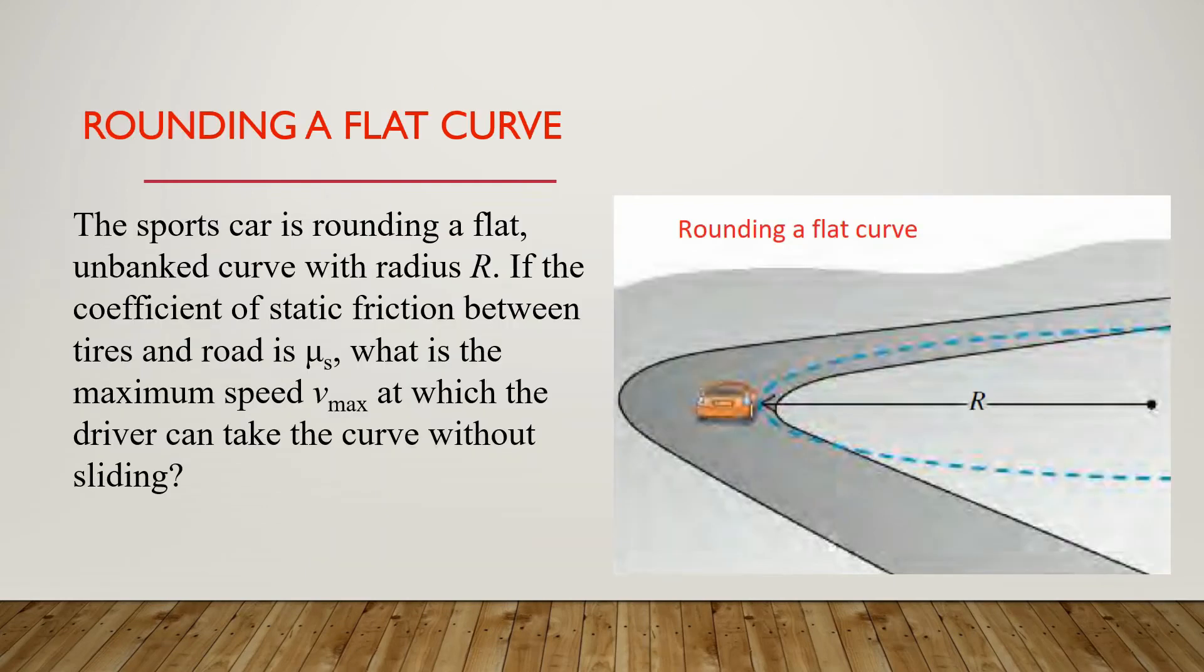A sports car is rounding a flat, unbanked curve with radius R. The coefficient of static friction between road and tires is mu s, and we have to find the maximum speed at which the driver can take the curve without sliding.